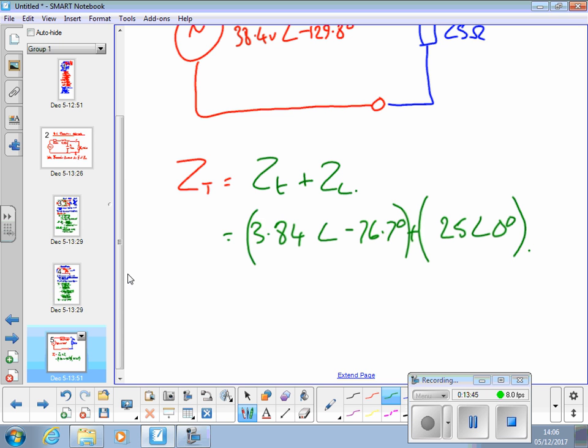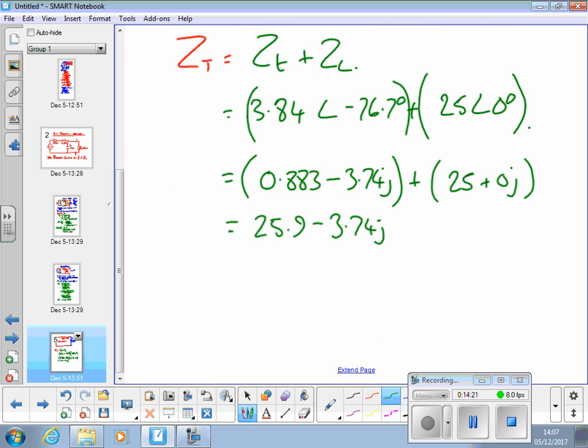So we probably want them in rectangular form. This is what I get. 0.883 minus 3.74J plus 25 plus zero J. Adding those together gives us 25.9 I've rounded it to minus 3.74J, which converts in polar form to 26.2 ohms angle minus 8.22 degrees.